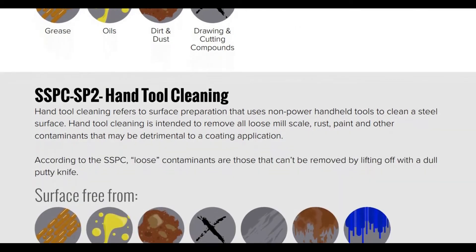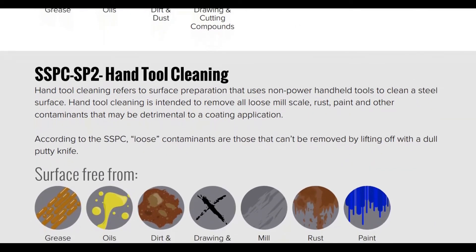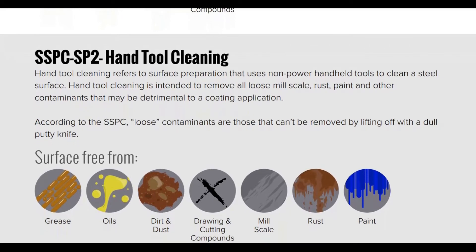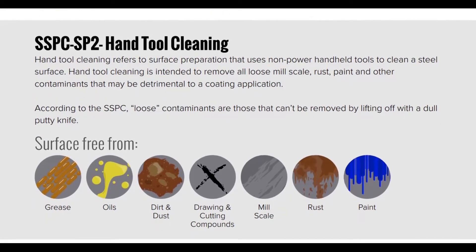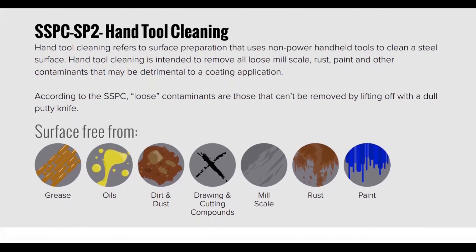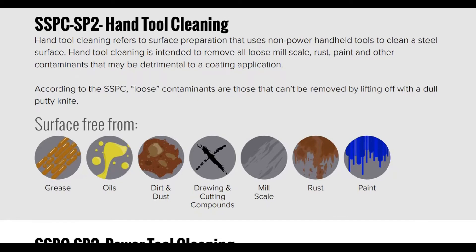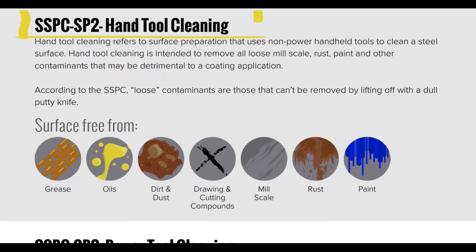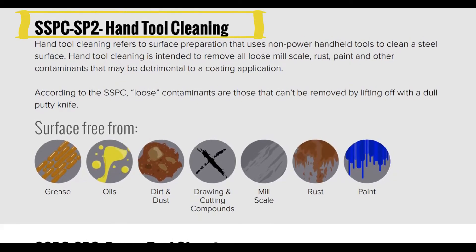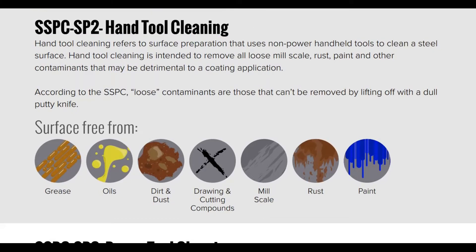SSPC-SP2 Hand Tool Cleaning: hand tool cleaning refers to surface preparation that uses non-powered handheld tools to clean steel surfaces. It is intended to remove all loose mill scale, rust, paint, and other contaminants that may be detrimental to coating application. According to SSPC, loose contaminants are those that can be removed by lifting off with a dull knife. The resulting surface should be free from grease, oil, dirt, dust, drawing and cutting compounds, mill scale, rust, and paint.